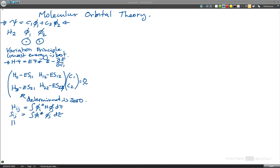Now what we're going to use here is Hückel theory. What this says is that Hij is equal to alpha if i equals j, it equals beta if i and j are adjacent, and equals zero otherwise. And Sij is equal to one if i equals j and equals zero otherwise.